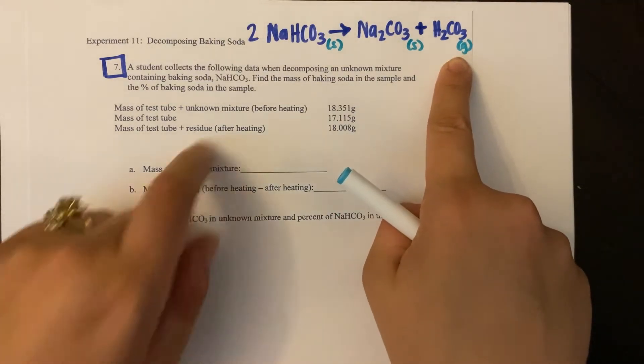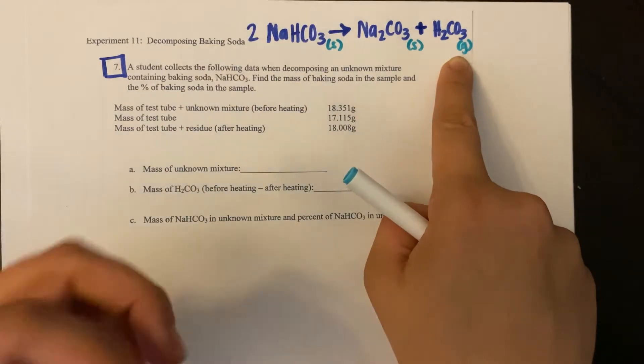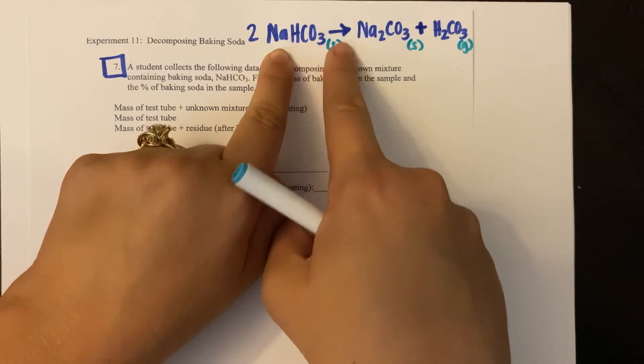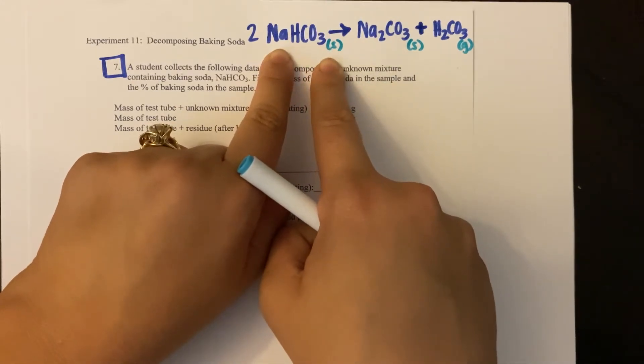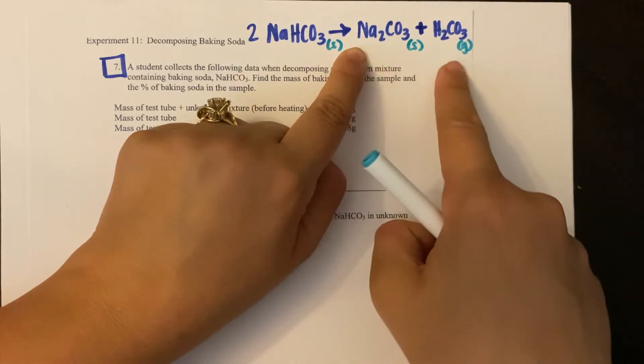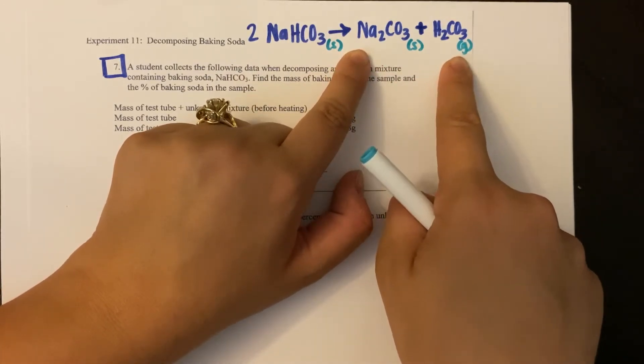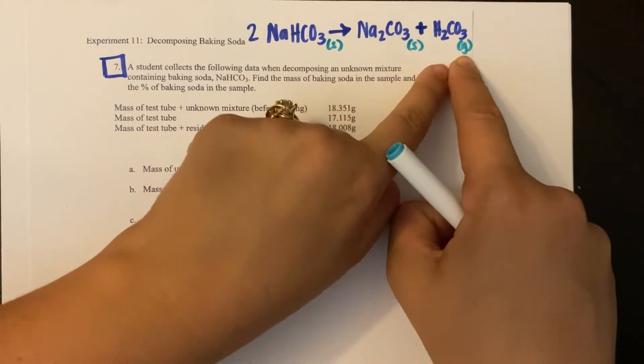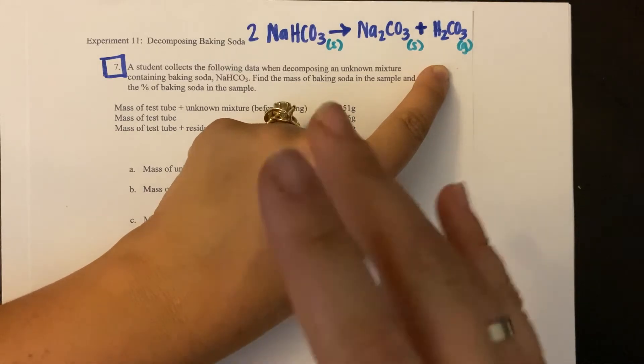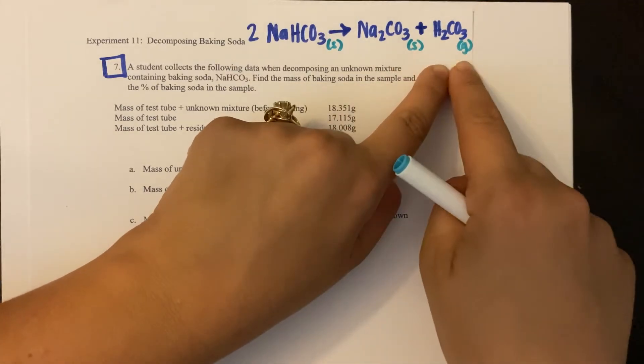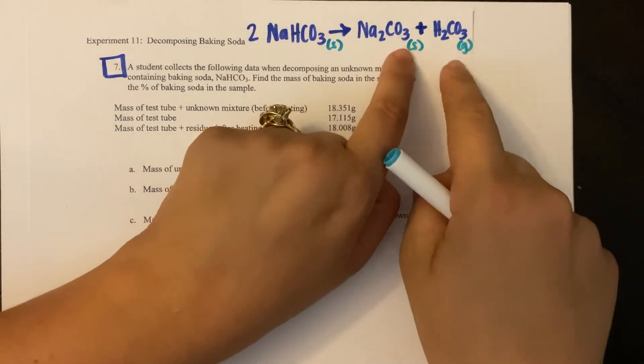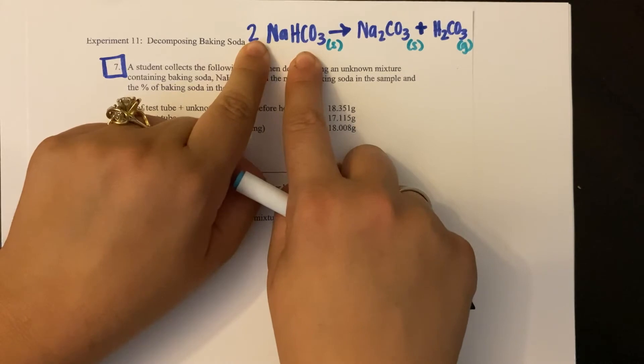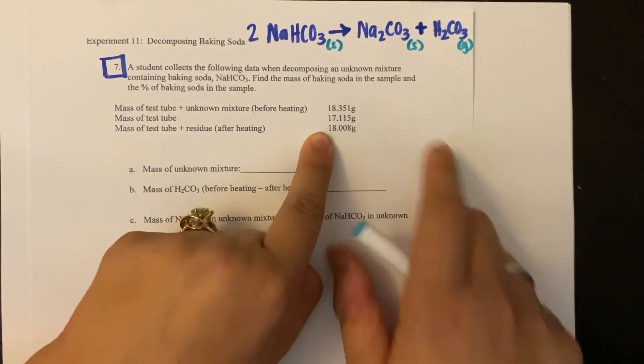Because that tells me that my initial, before my reaction starts, I put in some baking soda into my test tube, and then after I heat it up, because I'm decomposing it, I'm heating it up and the decomposition happens, my test tube is actually going to be lighter. Because some of my products are not just a solid, some of them are also a gas that will turn into a gas and it will go out of the test tube. So my test tube on the product side should be lighter than my reactant side, and if we look, that's exactly what this tells us.